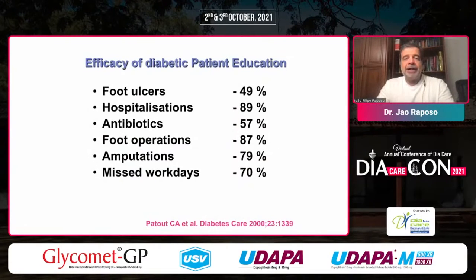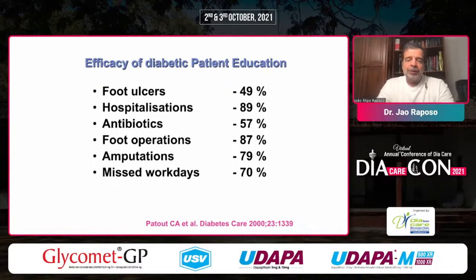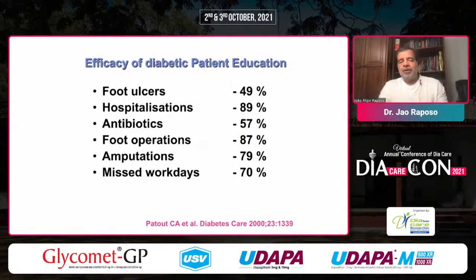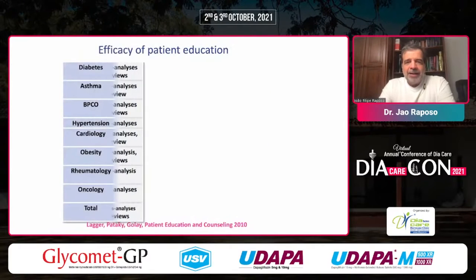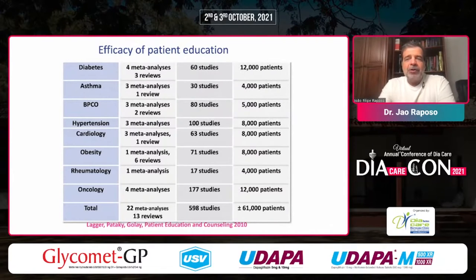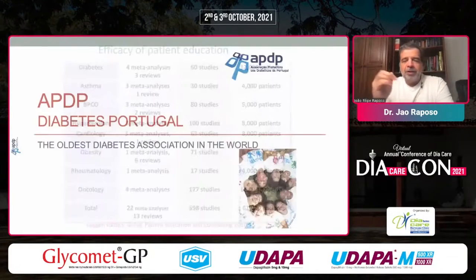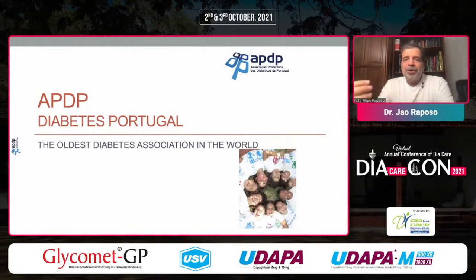In the area of diabetes, there are clear demonstrations that foot ulcers are reduced by almost 50%, hospitalizations by around 90%, antibiotic use by 67%, foot surgery and amputations also significantly reduced, as are missed work days. So why are we still discussing in 2021 whether we should provide good patient education? This is also demonstrated in most chronic conditions — asthma, COPD, hypertension, cardiology, obesity, rheumatology, oncology. Education is clearly the cornerstone for the treatment of people with any kind of condition.